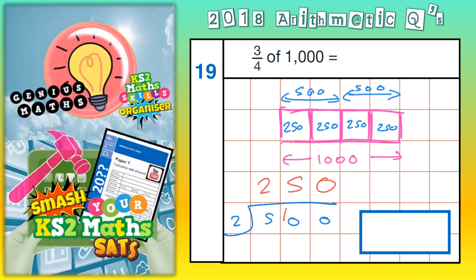But now, what you need to realize is that we're actually looking for three quarters. This square is just one quarter. So, one quarter is two hundred and fifty.